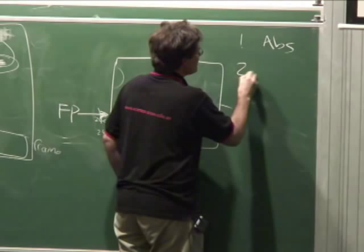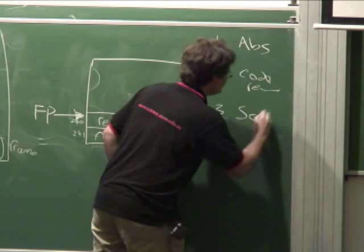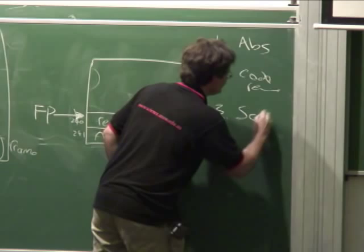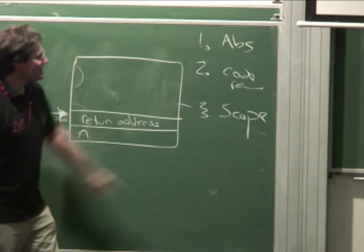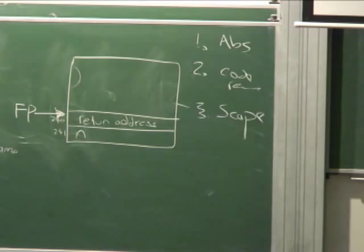Advantage number two was code reuse. Advantage number three was scope. Scope means everything's in its own little box and nothing affects anything else. We love scope. It's like wrapping everything in plastic in your lunchbox.